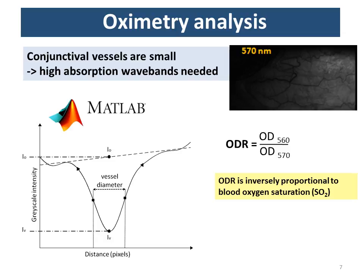For oximetry of these vessels, we used two-wavelength oximetry at 560 and 570 nanometres, which provide relatively high optical absorption — because if you look at these small blood vessels with 600 nm light, they're almost totally transparent. We did vessel analysis in MATLAB using vessel fitting to analyse transmission and find vessel diameters. The optical density ratio (ODR) we measure is inversely proportional to blood oxygen saturation. In retinal oximetry, ODR is directly calibrated to saturation, assuming arteries at ~97% and veins at ~60–70%. In this study, we simply report ODR and do not assume we know the oxygen saturation of these vessels.